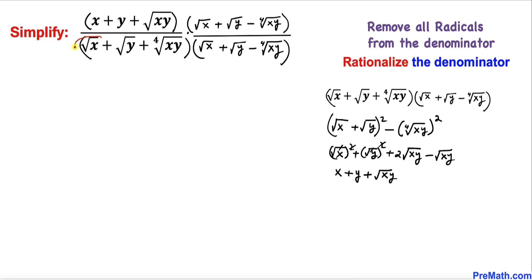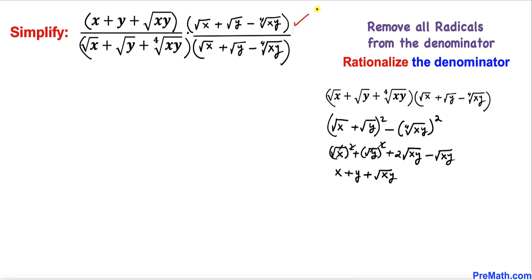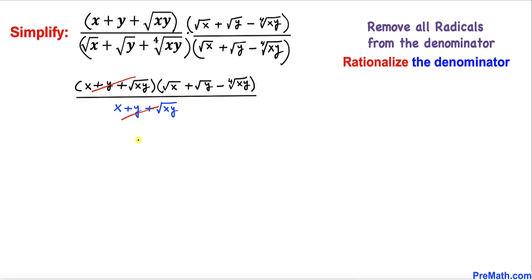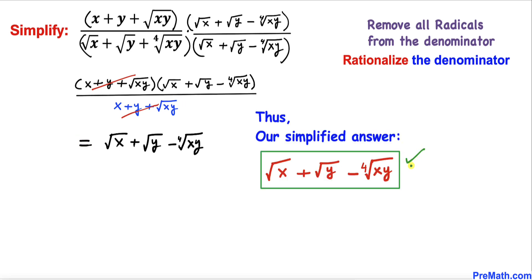We replace the whole denominator with this simplified form, keeping the numerator the same. In the next step, we can see that the factor x plus y plus square root of x y cancels from both numerator and denominator. So our simplified answer is simply square root of x plus square root of y minus the fourth root of x y.